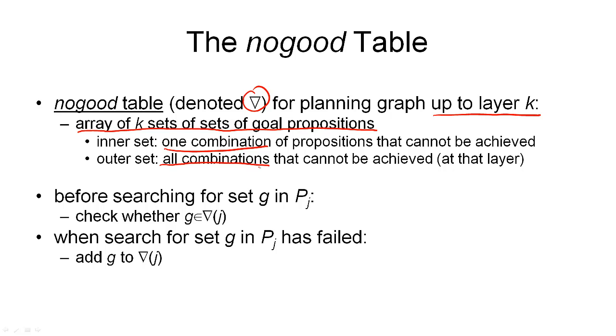And there are really only two types of operations we need to do on this data structure. Namely, before we are searching for a sub-goal G in our proposition layer P_J, what we do is we look in our nogood table to see whether we've encountered the sub-goal before. And remember, we only store those sub-goals where we have failed. So we have to check whether our new sub-goal, the sub-goal that we're currently looking for, is in nabla of J.